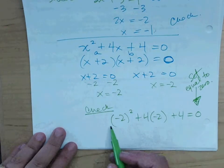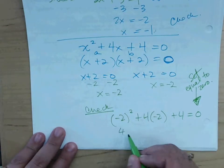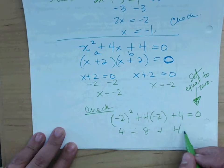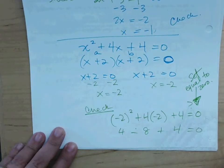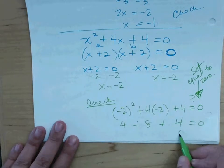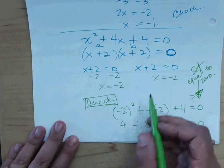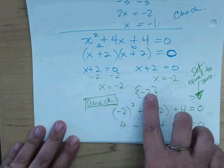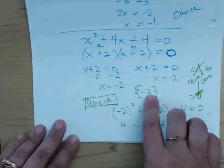So now if I plug in the negative 2 to check, I get 4 minus 8 plus 4. Is that equal to zero? Zero? Yes. Zero equals zero. So that's why I always want to include my check. And my solution here is negative 2. Even though it happens twice, I'm only including it once.